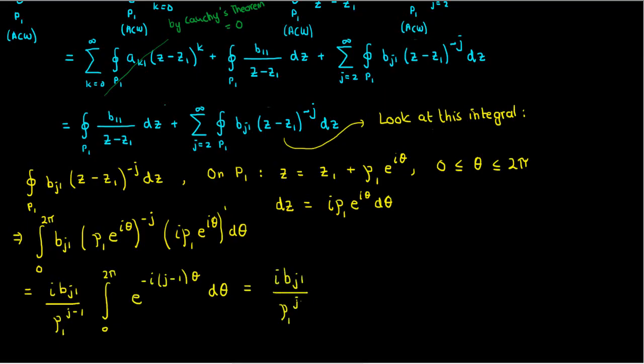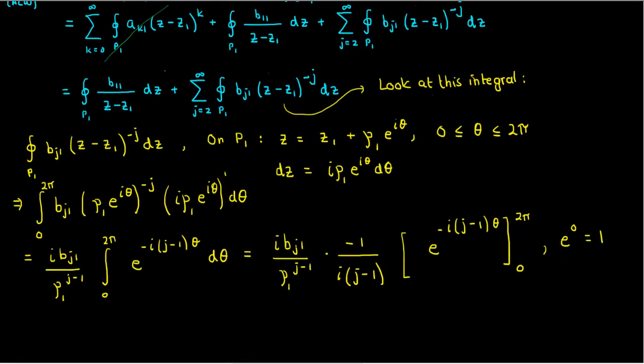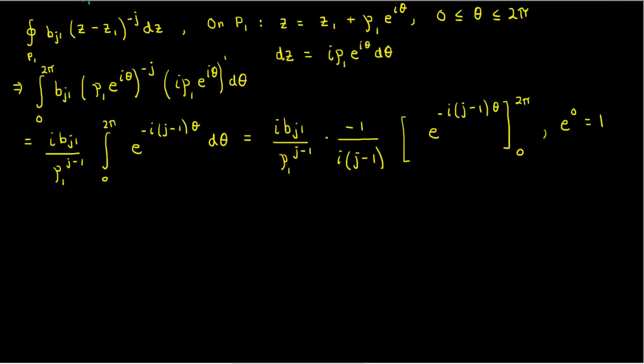Integrating this gives us b sub j1 times i over ρ1 to the j minus 1 times negative 1 over i times j minus 1 times the exponential of negative i times j minus 1 times θ. The limits are from 0 to 2π. Now if I apply the limits then I can see that at θ equals 0 my exponential is just the exponential of 0 which is 1. And at θ equals 2π I can apply Euler's formula which I'll write over here for your own verification.